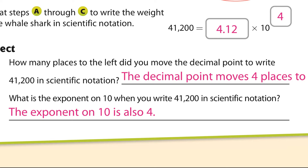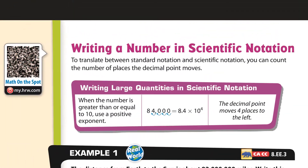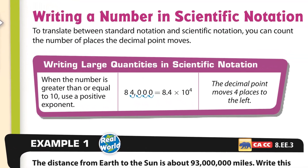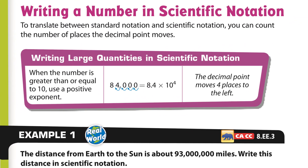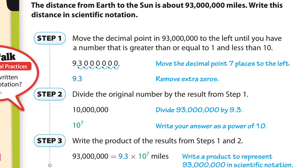That's the number one student mistake right there, so don't get that mixed up. Now let's see some more. Writing a number in scientific notation — translate between standard notation and scientific notation. You can count the number of places the decimal moves: 1, 2, 3, 4. That summarizes what happened in the previous exercise.